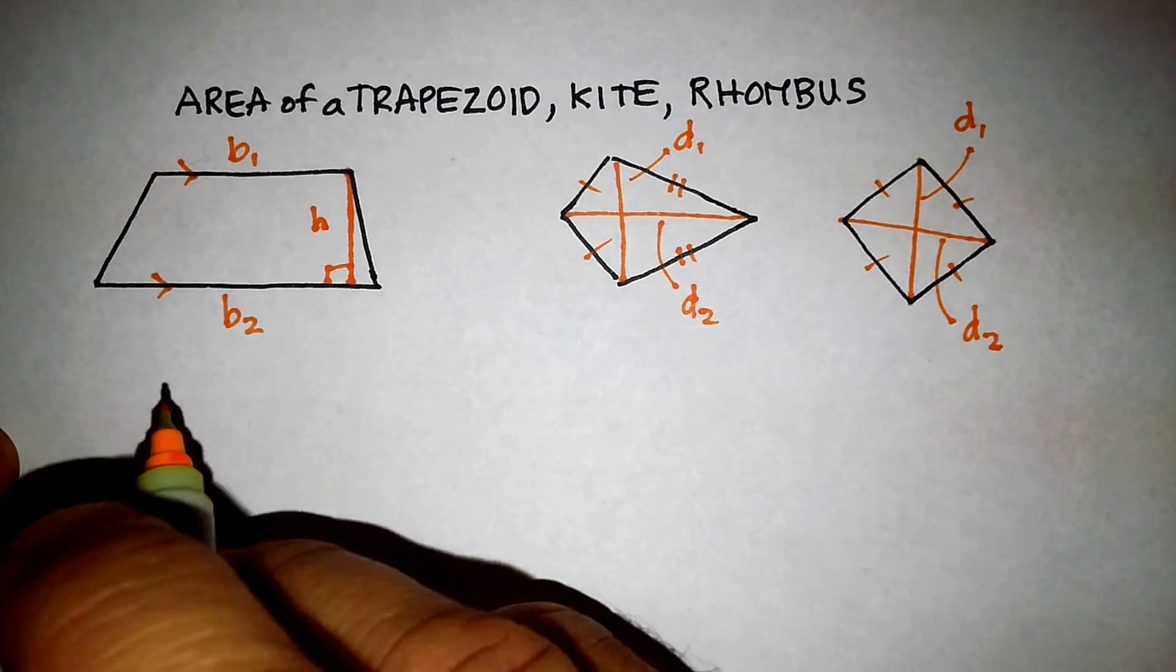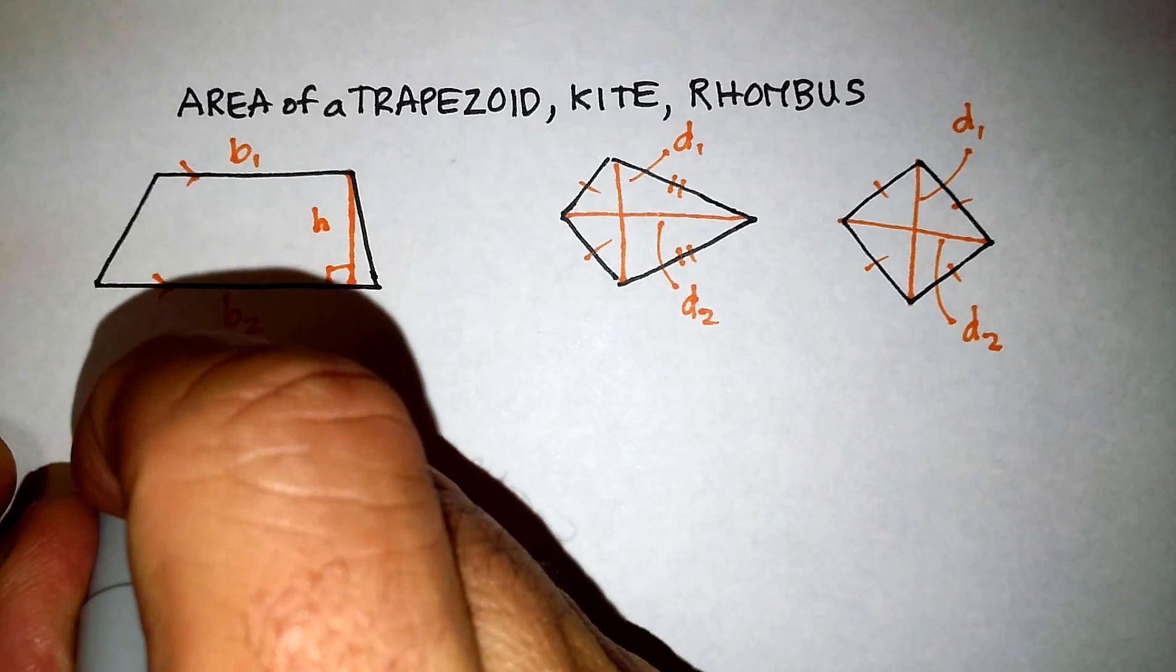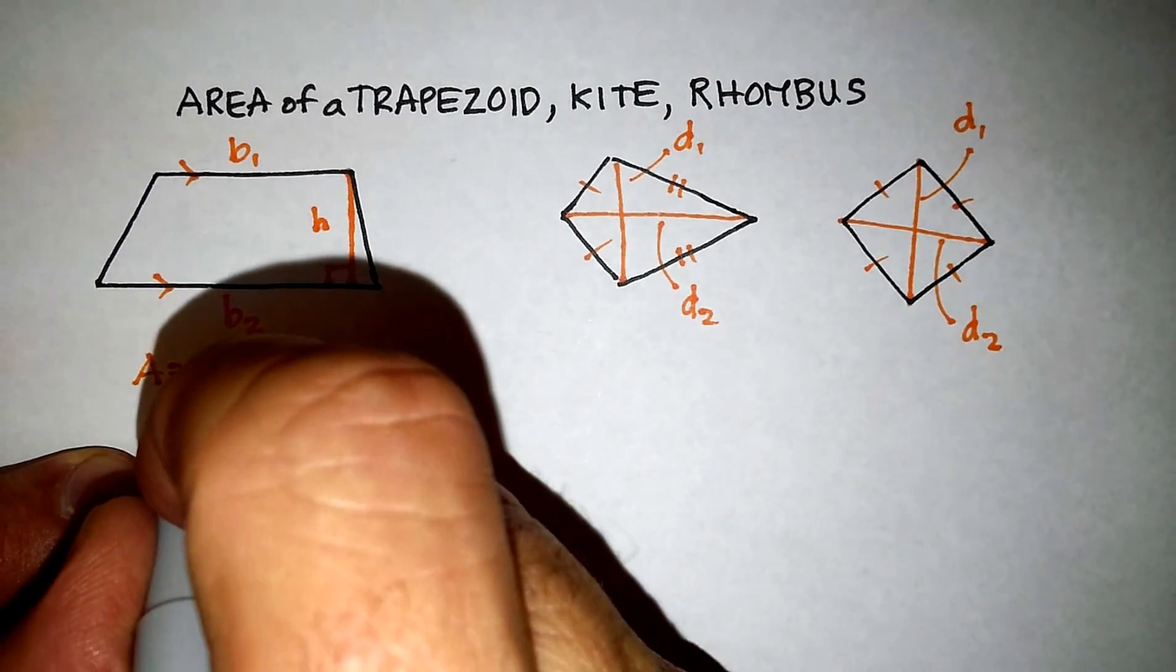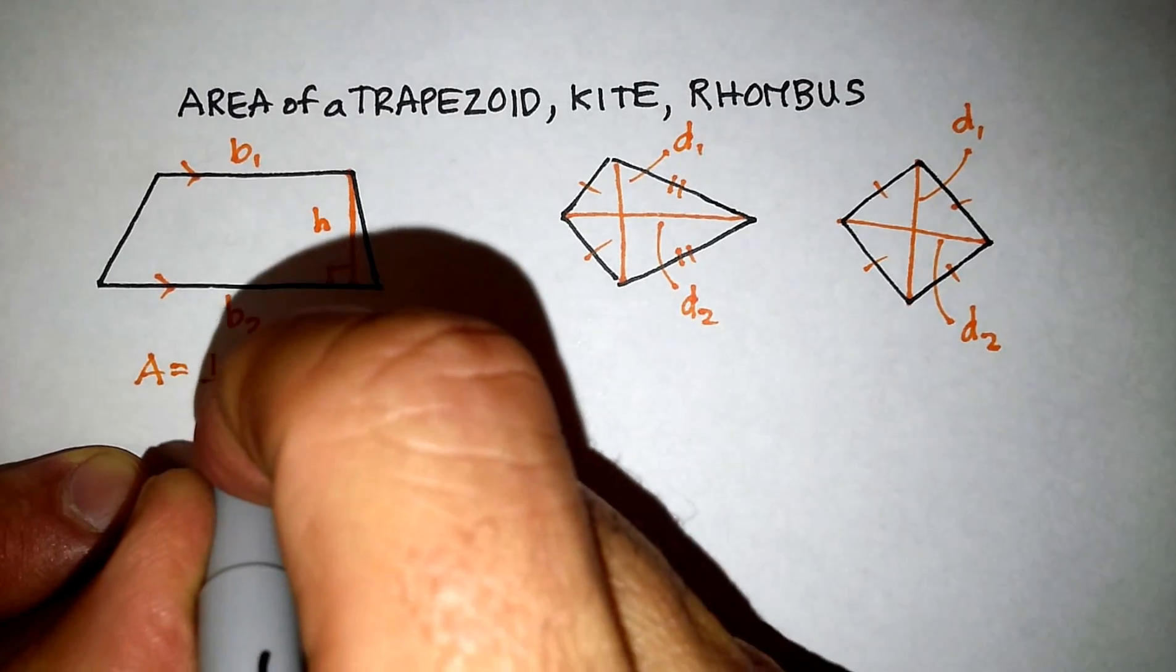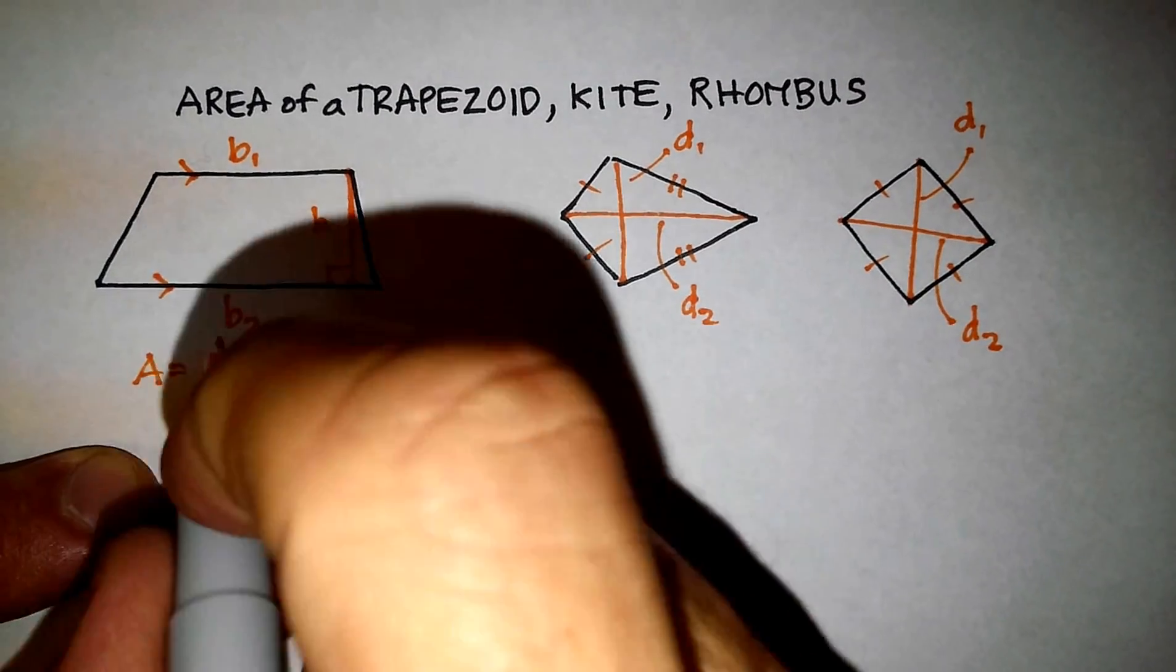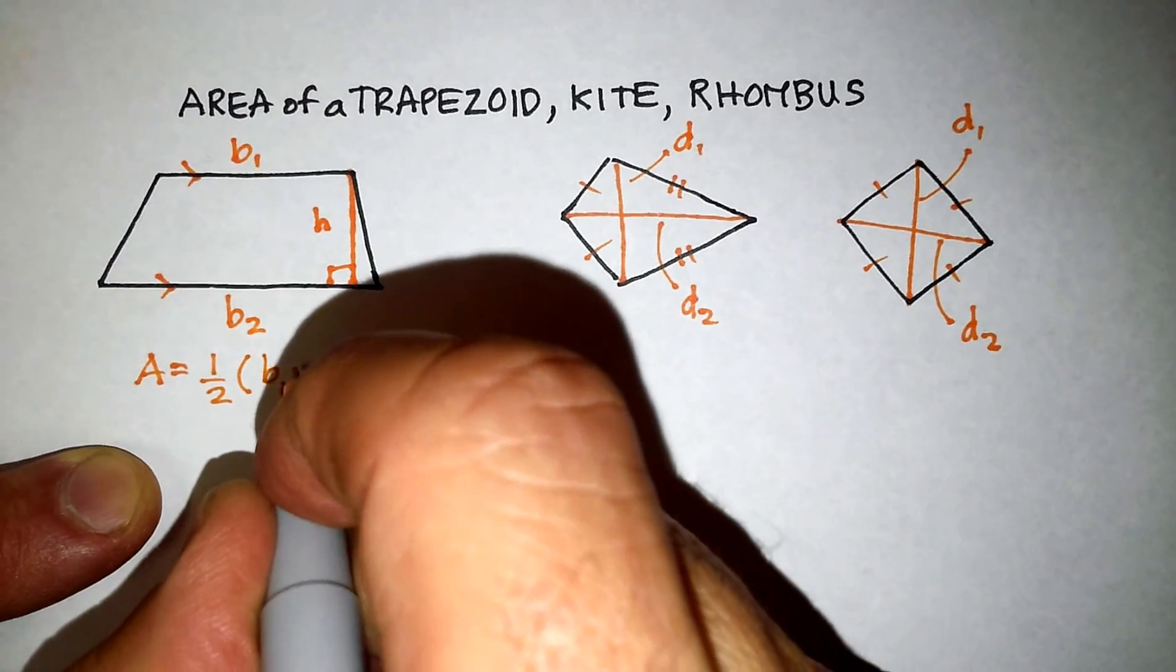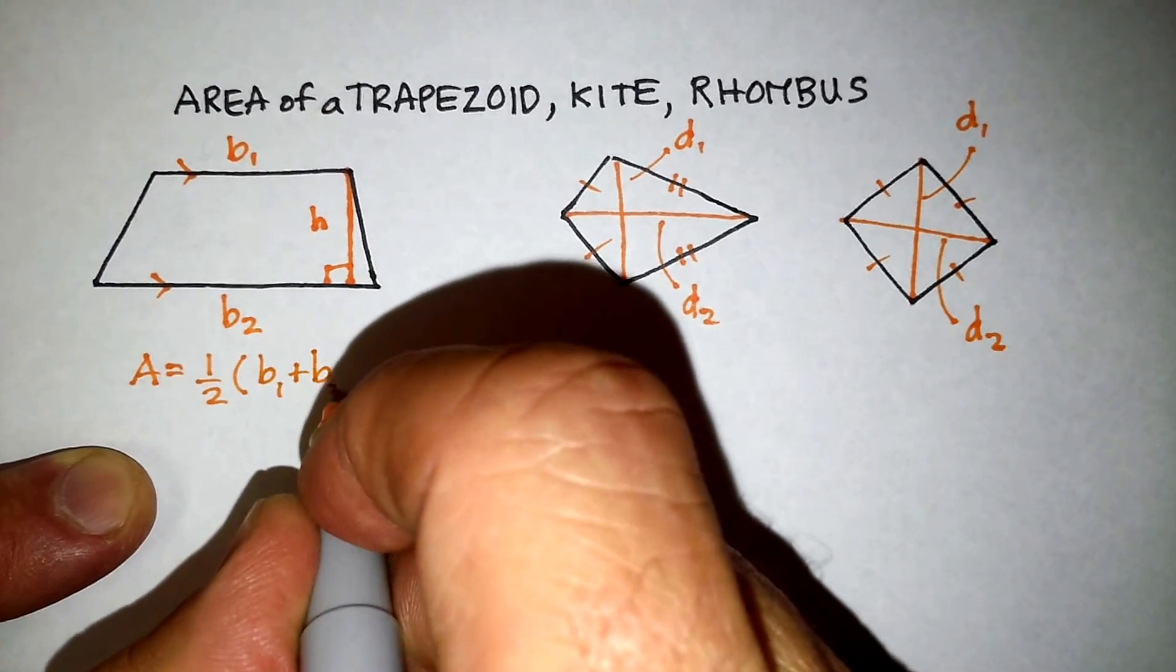Basically it has parallel bases and these sides here are called legs. Now the area of a trapezoid, remember when you find area it's capital A, is equal to 1 half times the sum of the two bases, the lengths of the two bases. So let's just do that.